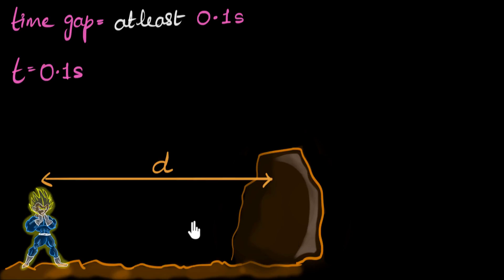That's why if the obstacle is closer, the time taken will be smaller and we won't hear the echo. But if the obstacle is farther, then the time taken will be larger than 0.1 second and we will be able to hear the echo. And so at the minimum distance, the time taken must be exactly 0.1 second.